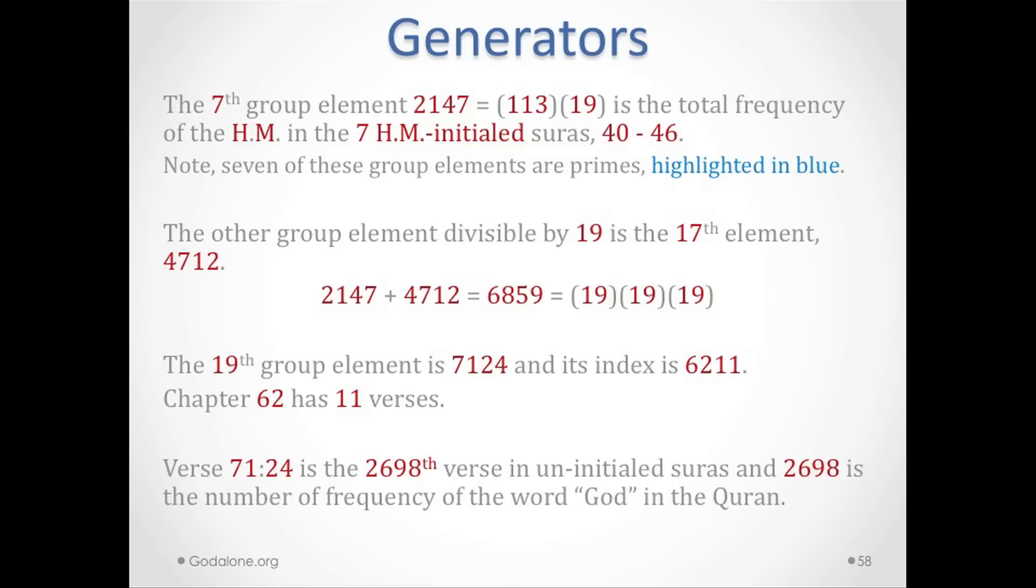The 19th group element is 7124, and its index is 6211. Chapter 62 in the Quran has 11 verses. Verse 71:24, which is the 19th group element of that table, is the 2698th verse in the uninitial chapters, and 2698 is the number of frequency of the word 'God' in the entire Quran.